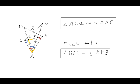From this, it follows that two triangles ACQ and ABP are similar, because each of them has a combination of one red and one blue angle. And from that, we can deduce fact number one, that angle BAC is congruent to angle APB,